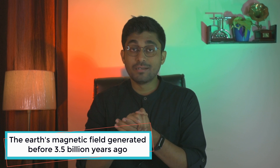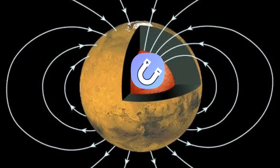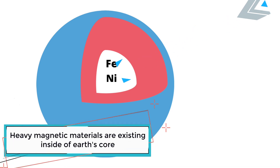Earth's magnetic lines of force extend 10 to 1000 kilometers in extent. Earth's magnetic field is estimated to be around 3.5 to 4.5 billion years old.